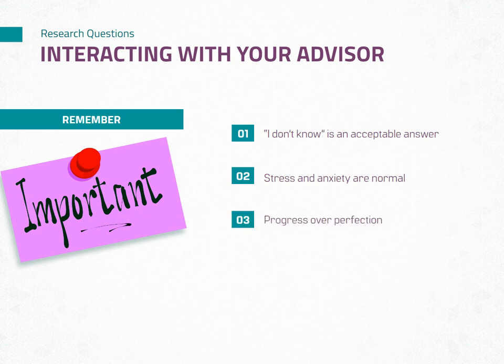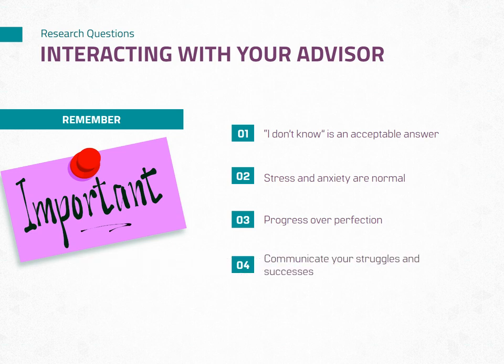Third, progress over perfection. Progress over perfection is always the best course of action. I would recommend avoiding moving meetings or avoiding meeting with your advisor because you feel what you have isn't good enough or you want to get just one more thing done. Meet with your advisor anyway. Explain in verbal and written format what you have done and what is yet to be done. No research is perfect — there are always going to be struggles and setbacks, ebbs and flows of action. This process is not linear and your advisor should understand that. Fourth, communicate your struggles and your successes. It is their job to guide you and train you.